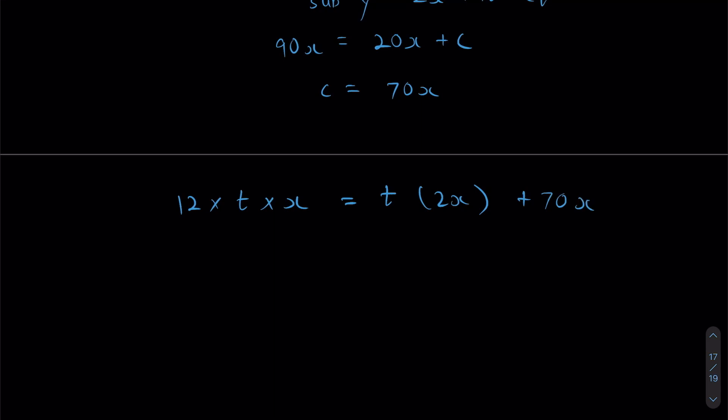I now have 12TX is equal to 2TX plus 70X. I bring this over, I'll now get 10TX equals to 70X. Since I have X on both sides, I'm going to do some cancellation, just like this, cancel both X.